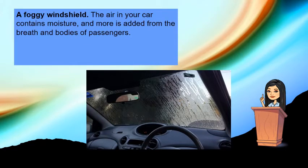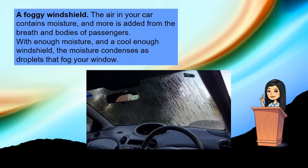Another example is a foggy windshield. The air in your car contains moisture, and more is added from the breath and bodies of passengers. With enough moisture and a cool enough windshield, the moisture condenses as droplets that fog your window. So when you see fog on your window, it means that condensation is taking place.